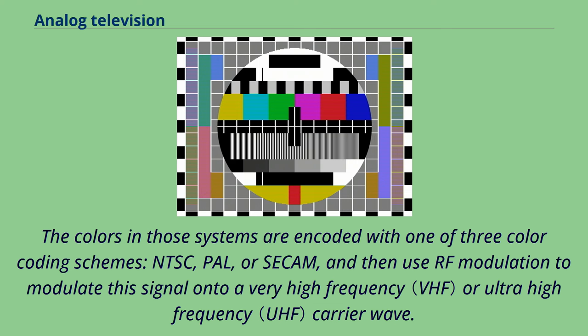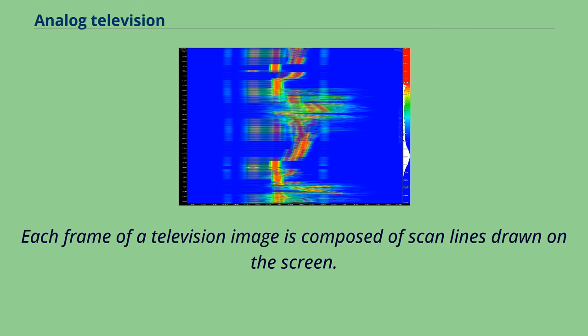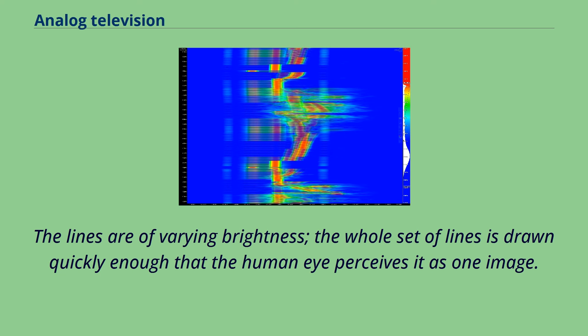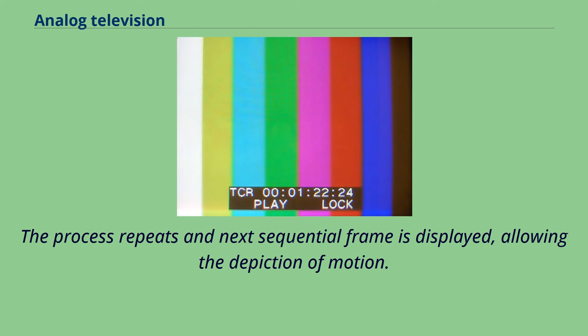Each frame of a television image is composed of scan lines drawn on the screen. The lines are of varying brightness. The whole set of lines is drawn quickly enough that the human eye perceives it as one image. The process repeats and next sequential frame is displayed, allowing the depiction of motion.